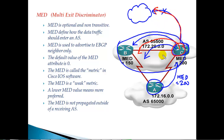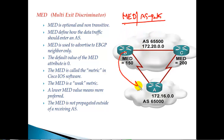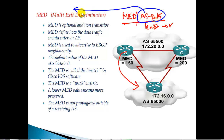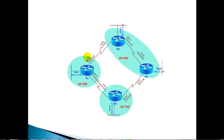Unlike AS path, where doing AS path prepend propagates the information to all different autonomous systems, MED is propagated only within that receiving autonomous system. Both MED and AS path prepending are generally used for the same purpose — to decide how traffic should enter our autonomous system — and in both cases, the lower value is more preferred. The key difference is that AS path information is propagated to all remote autonomous systems, while MED is propagated only within the receiving AS.